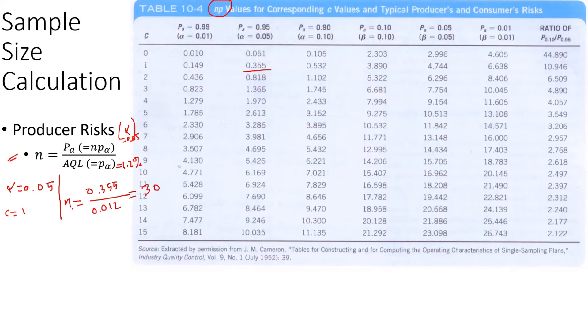So the sample size, if we use C value 1, that is the sample size, let's say N1. Now if we use C value 2, for example, let's see what we get. So N2, meaning C value 2, we'll be looking at this, which is 0.818 divided by 0.012, is equal to 68.